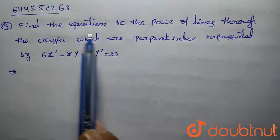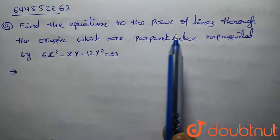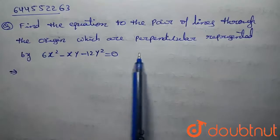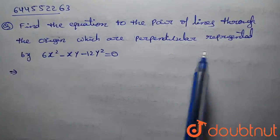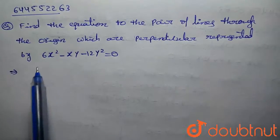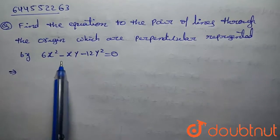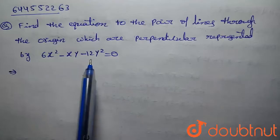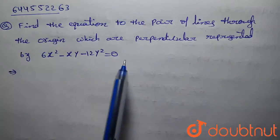The given question is: find the equation of the pair of lines through the origin which are perpendicular to those represented by 6x² minus xy minus 12y² equals 0.